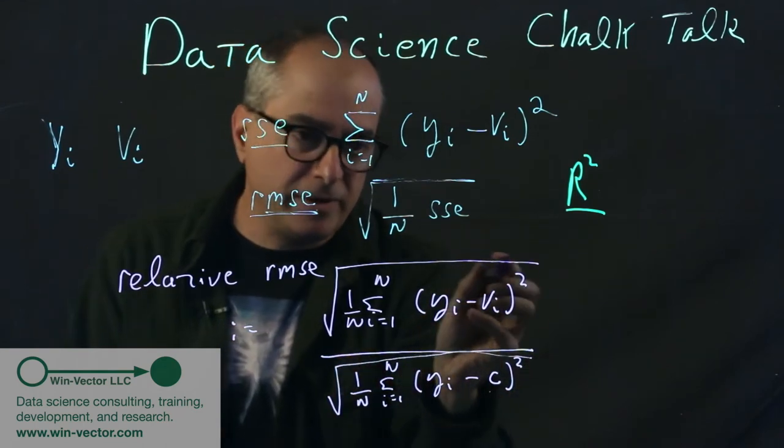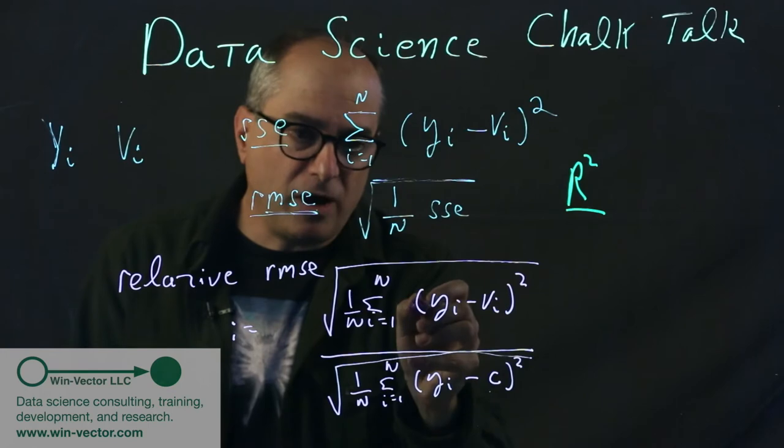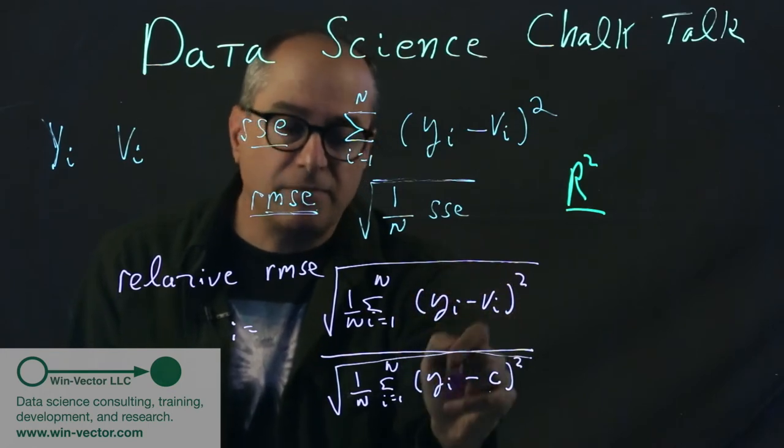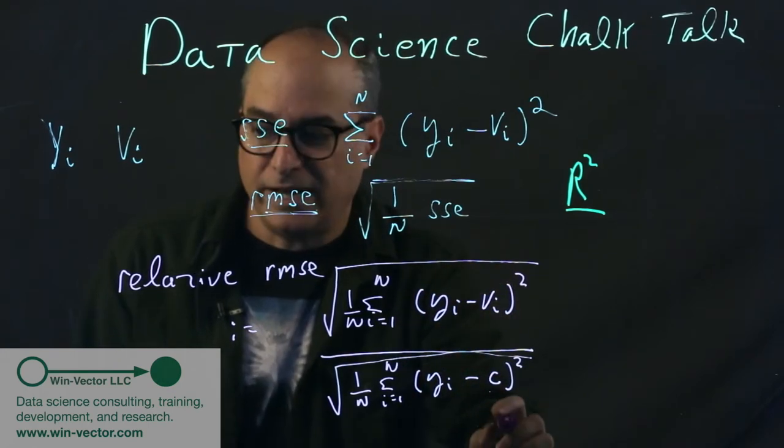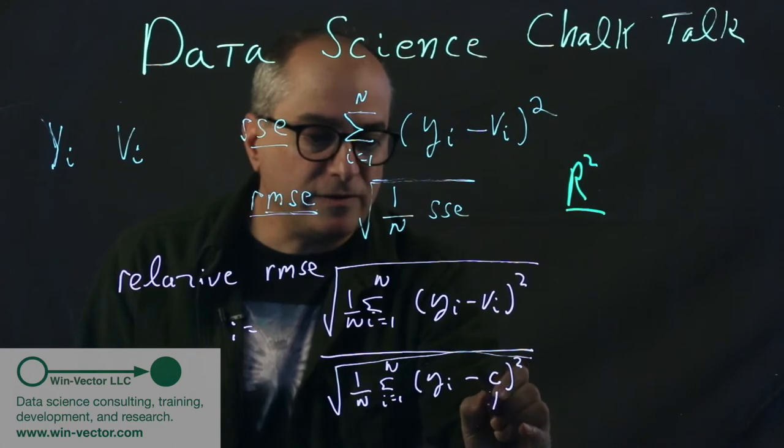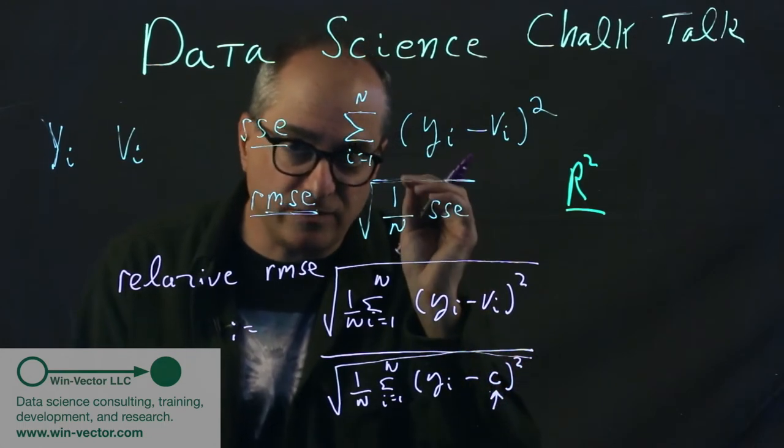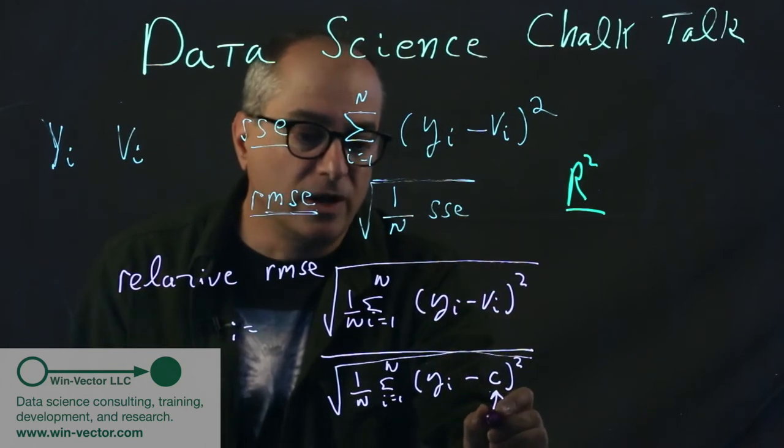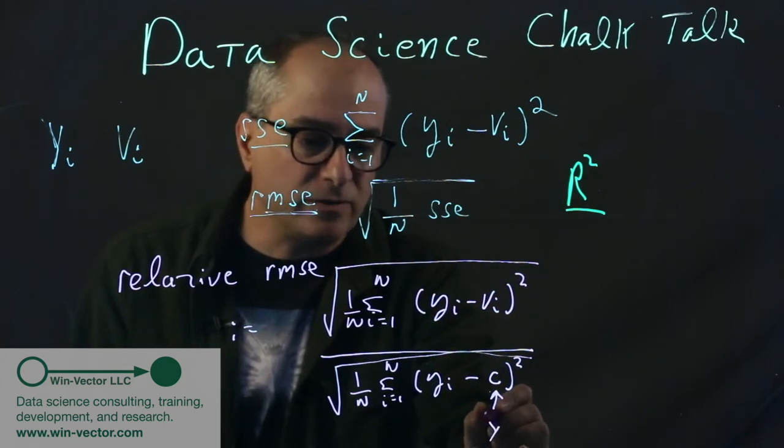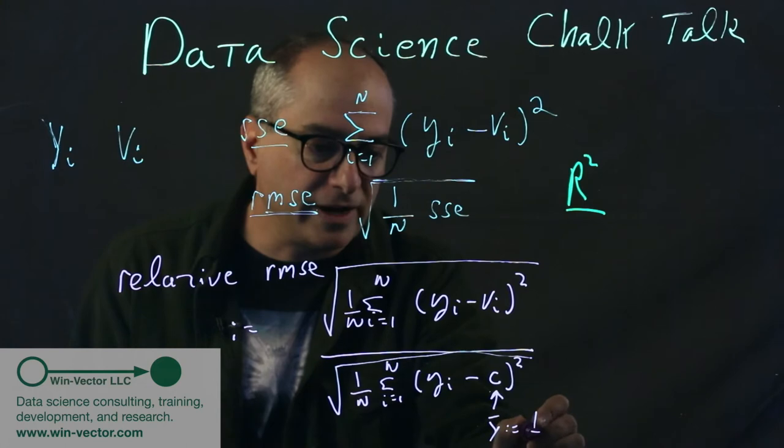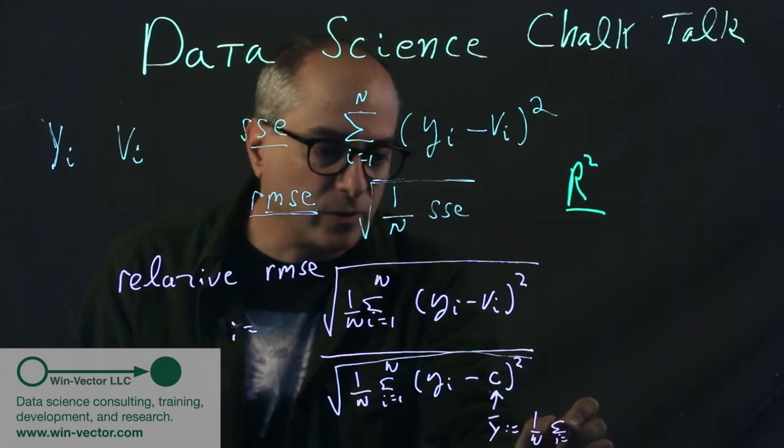So it's basically, how small is your RMSE compared to somebody else's RMSE? And in particular, notice that this other prediction is not subscripted with an i, which means we have to use the same prediction for every data row. The most obvious thing to put in there is y bar, which is 1 over n, sum i equals 1 to n, yi.